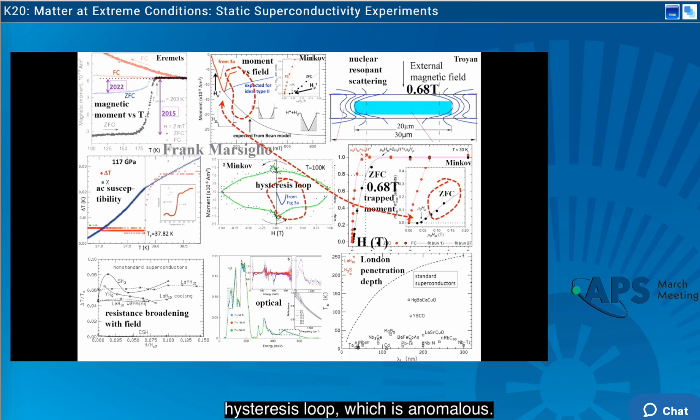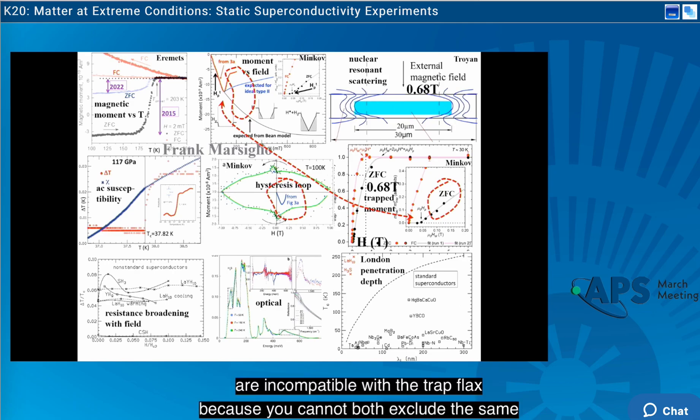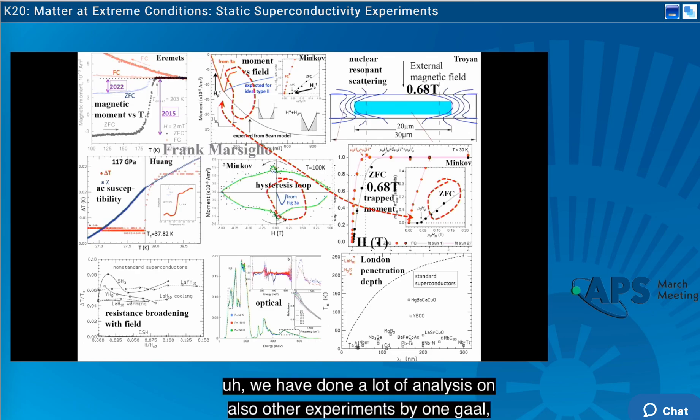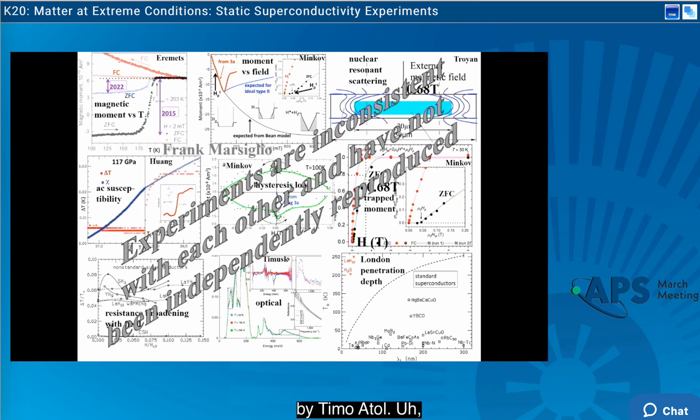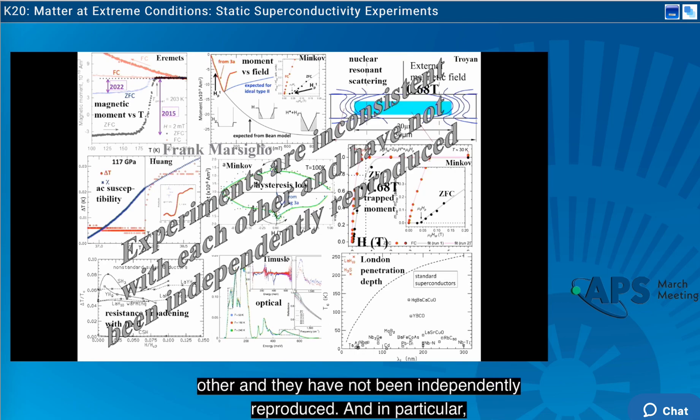The hysteresis loop shows that the magnetization curve does not join the hysteresis loop, which is anomalous. Because the data that were published a few years ago on nuclear resonance scattering, again, are incompatible with the trapped flux, because you cannot both exclude the same field and trap the same field in the same kind of measurement. So we have done a lot of analysis on also other experiments by Wang et al, by Troyan et al. So basically, the message of this is that the experiments are inconsistent with each other, and they have not been independently reproduced.